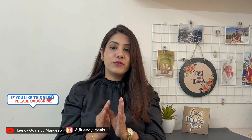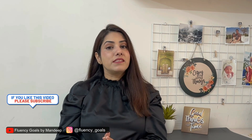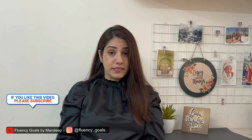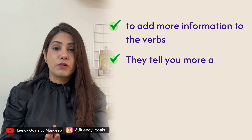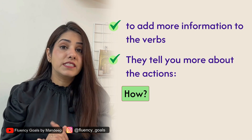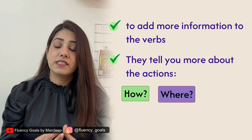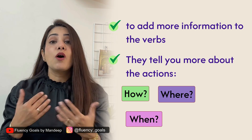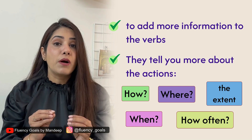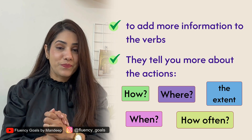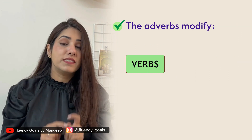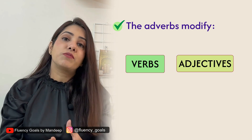Like an adjective is used in a sentence to modify a noun, similarly adverbs are used to add more information to verbs. They tell you how the action is being performed, where it is performed, when it is performed, and how often. All this additional information about a verb is provided by a word called adverb. Not only do they modify verbs, but they can also modify adjectives as well as another adverb.